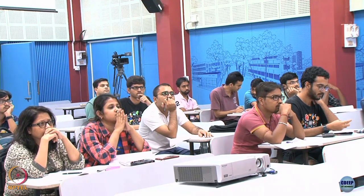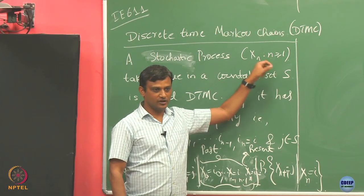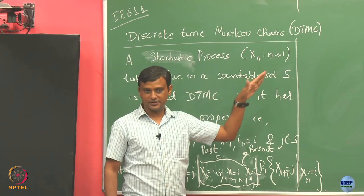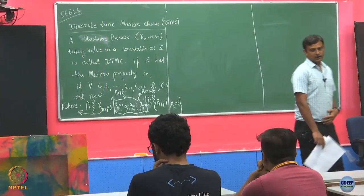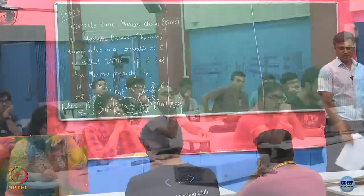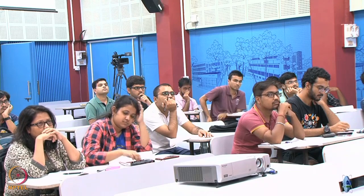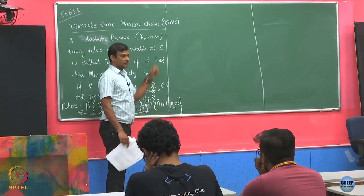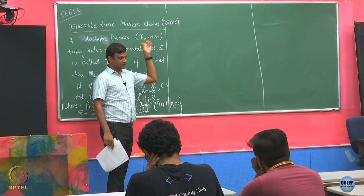Discrete time should be obvious because we index time with discrete values — just counting 1, 2, 3. These time indexes are not continuous. In this course we will mostly focus on discrete time Markov chains, and if time permits we will touch upon continuous time Markov chains, where the time index can take any value in some interval.